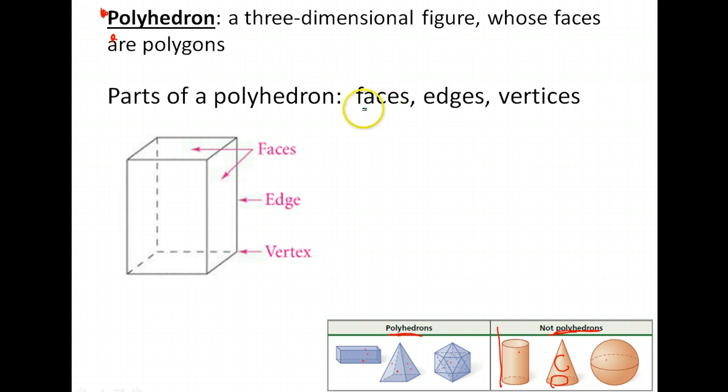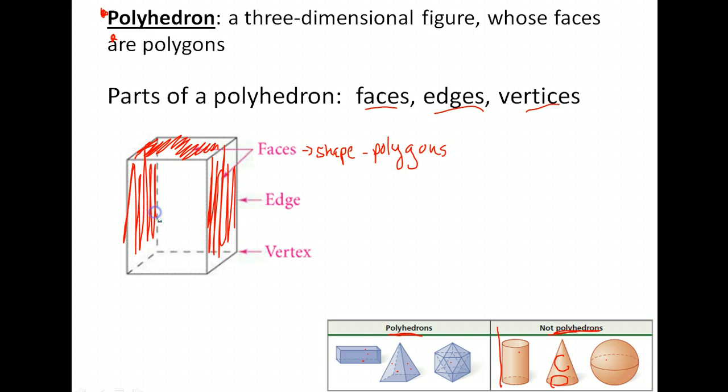With polyhedrons, one thing we like to identify is the faces, edges, and vertices. The faces are the shapes. The faces would be the polygons. When we talk about this figure, notice the top here. If I were to shade it, that is a square face. The side here is also a face. We have a side on the left also that's a face, and then we have a back and a front, and then we have our bottom down here. So those are the faces.